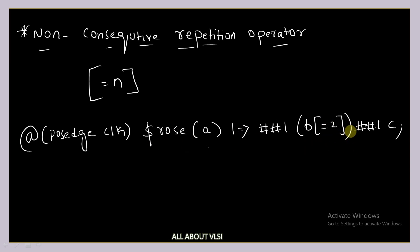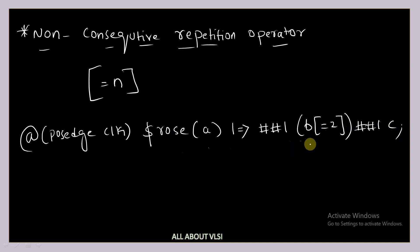After that, after one cycle, c can be high. In this non-consecutive operator, there is no restriction on the number of cycles between c and the second b. We will see this with an example — it will be more clear.